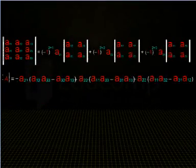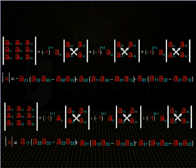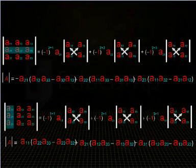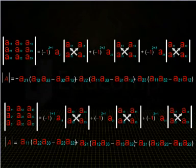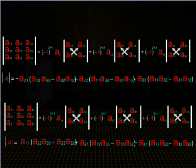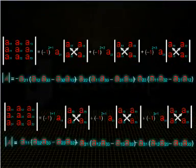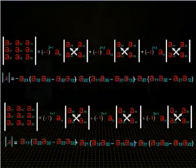Similarly, you can expand the determinant along any row or any column. By expanding the determinant along any row or column, you observe that the value of the determinant is the same as obtained by expanding it along the first row.